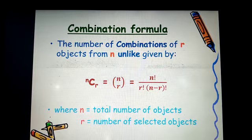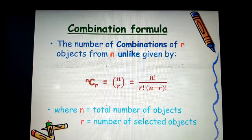Where n is the total number of objects, r is the number of selected objects.